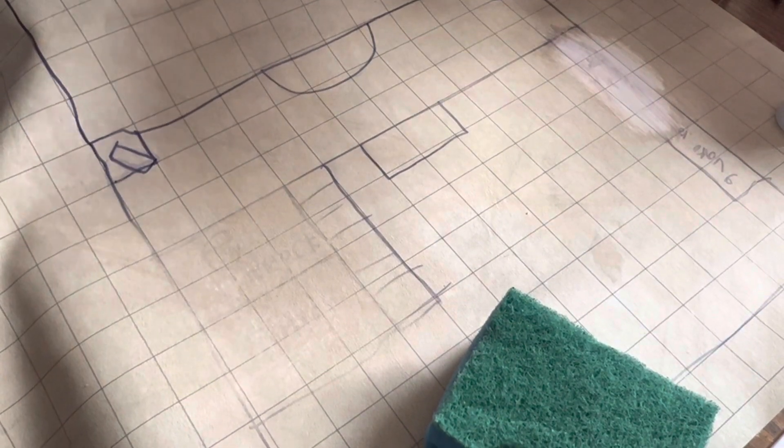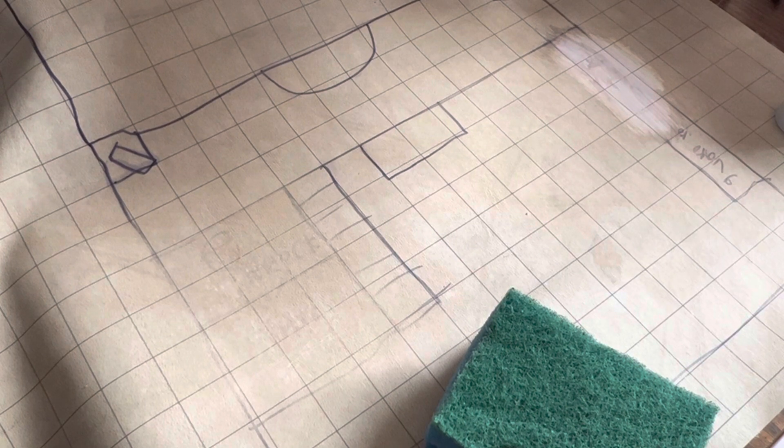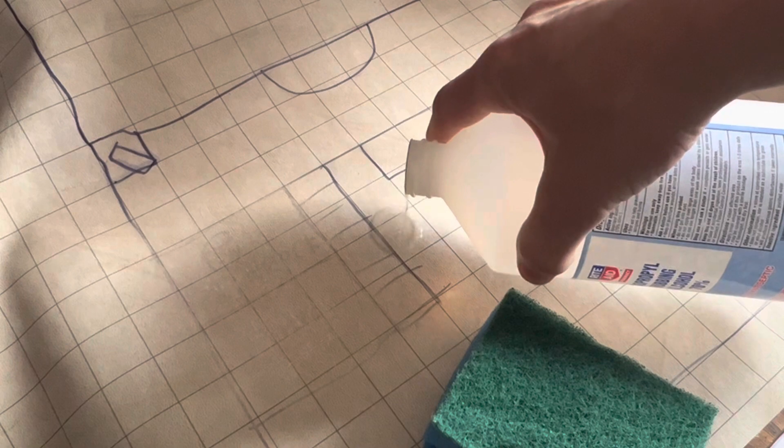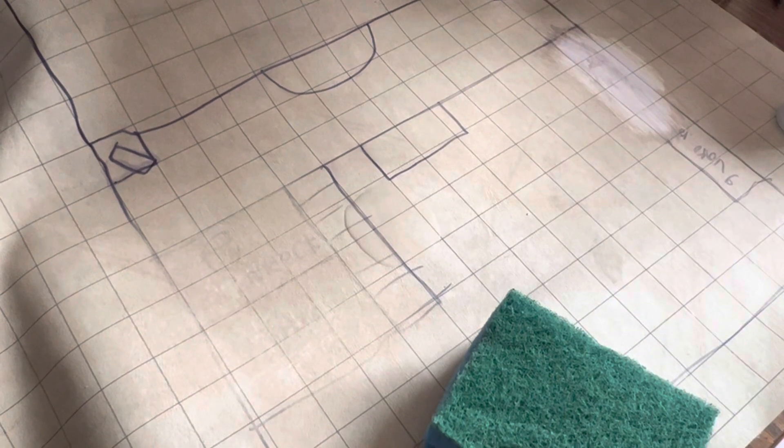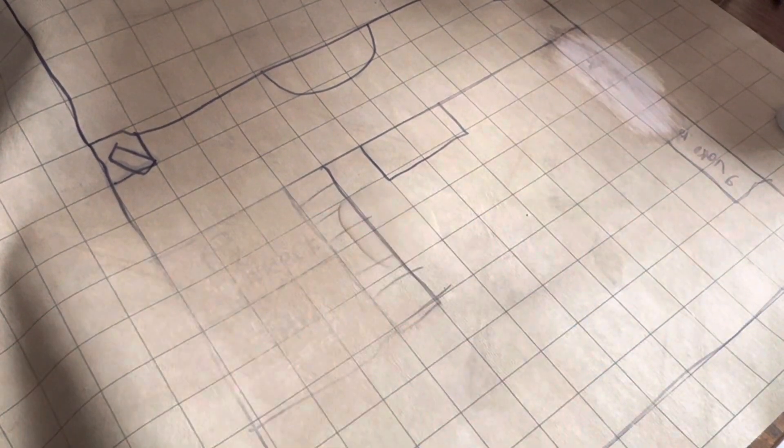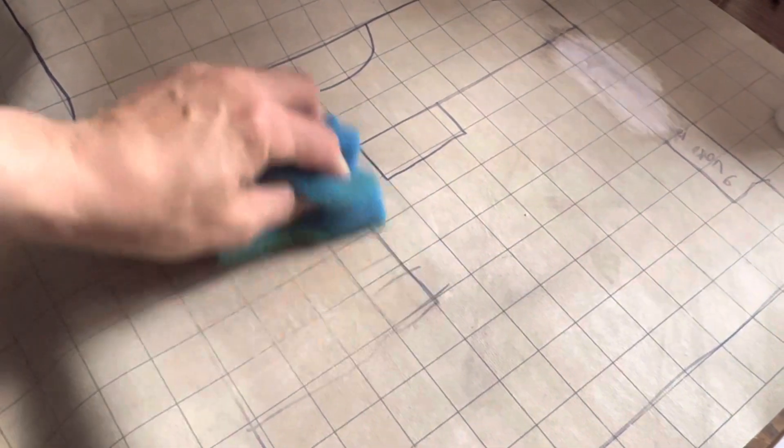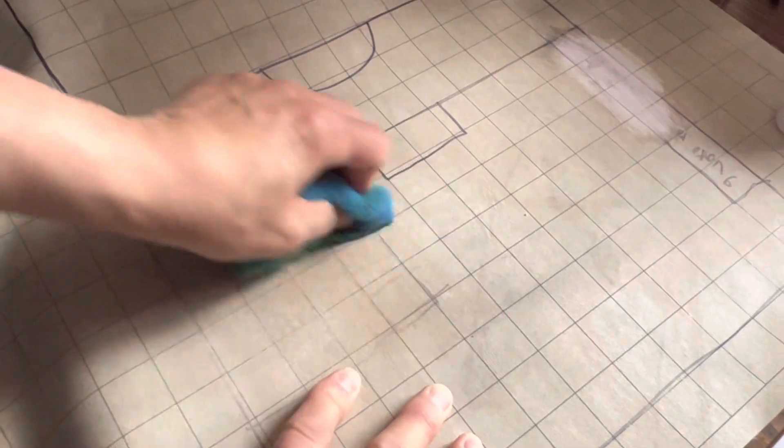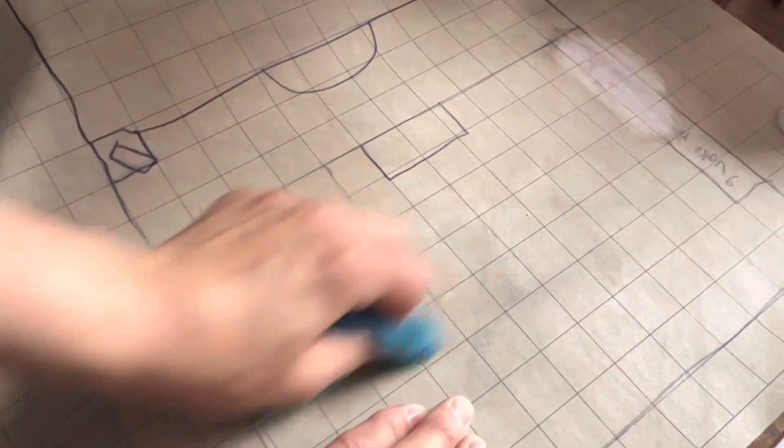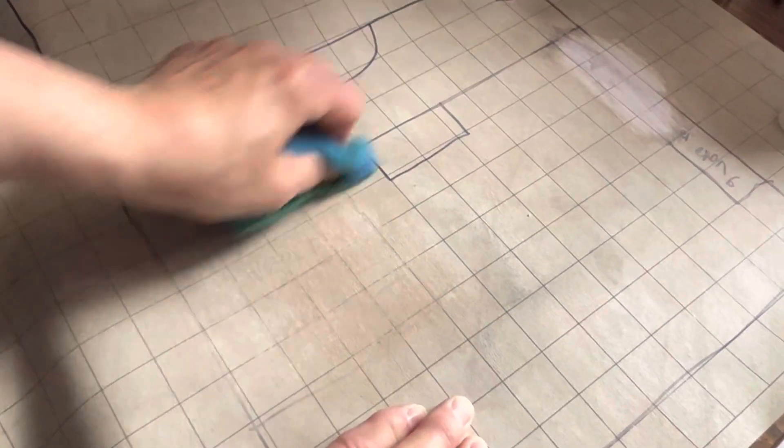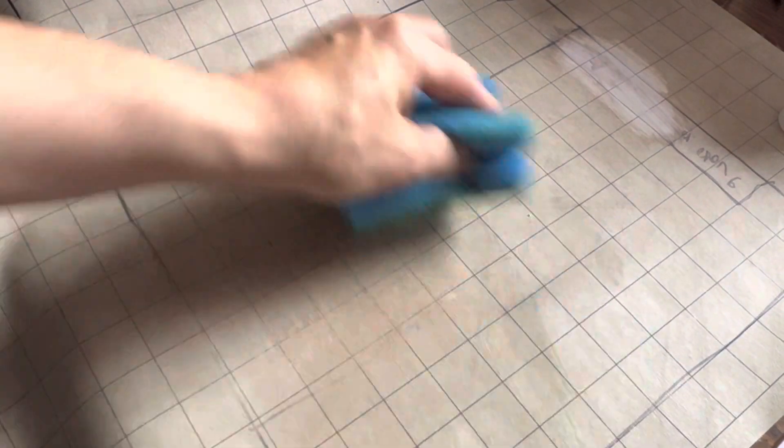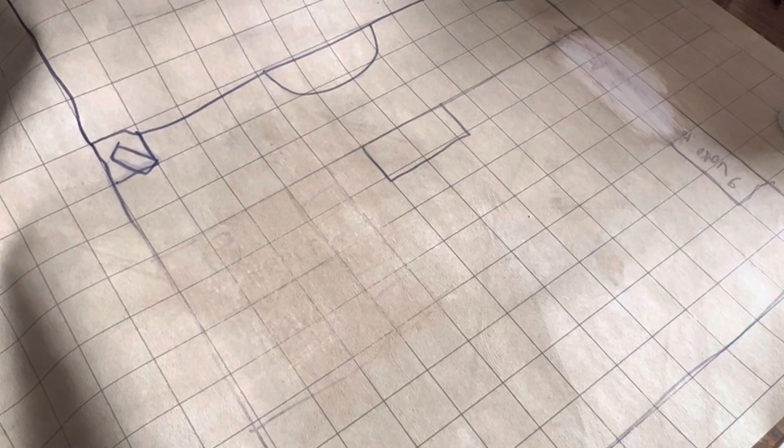But what I have found that works now is you take the isopropyl alcohol, put a liberal amount here, and a scrubby sponge. That seems to be getting it. You need a little bit of friction, and maybe I'm taking the first layer off the chess export by doing that, but at least I'm getting rid of the permanent marker.